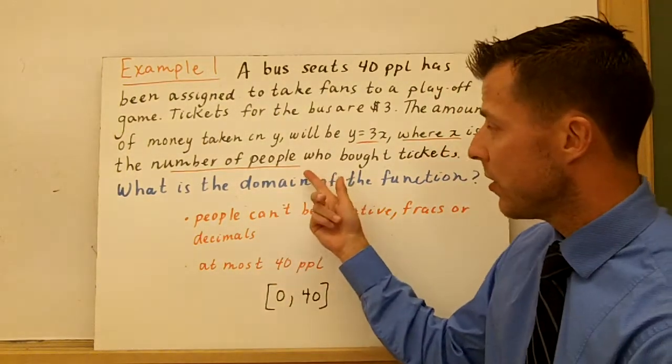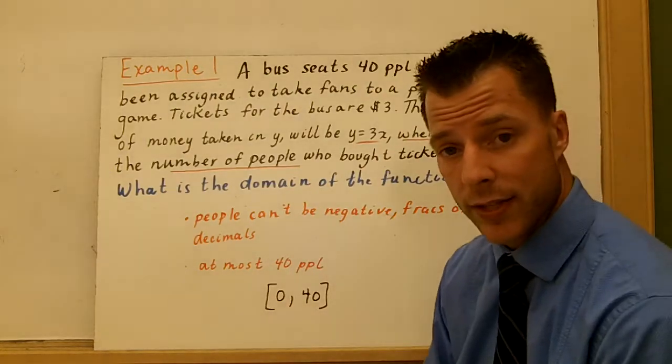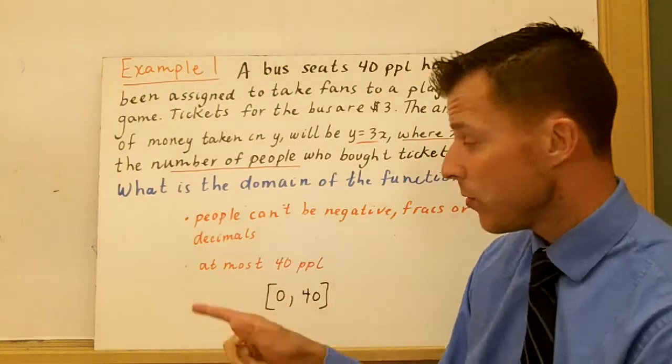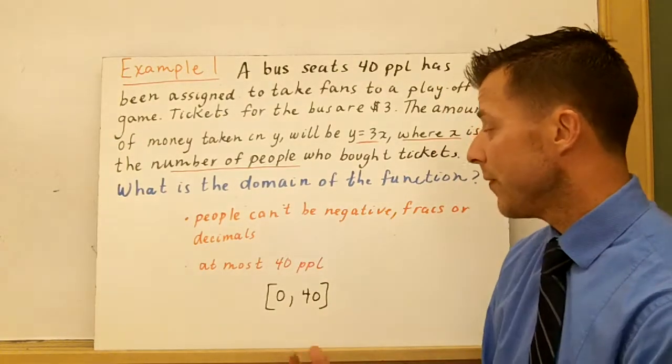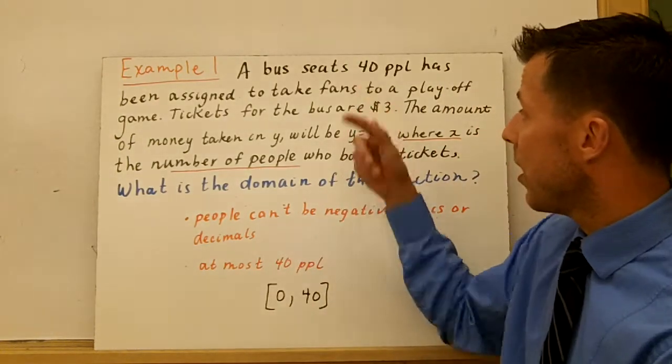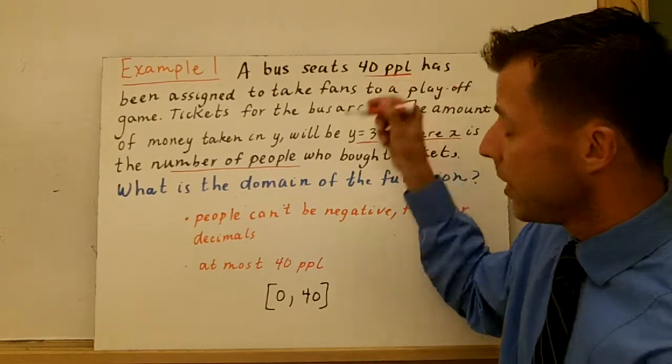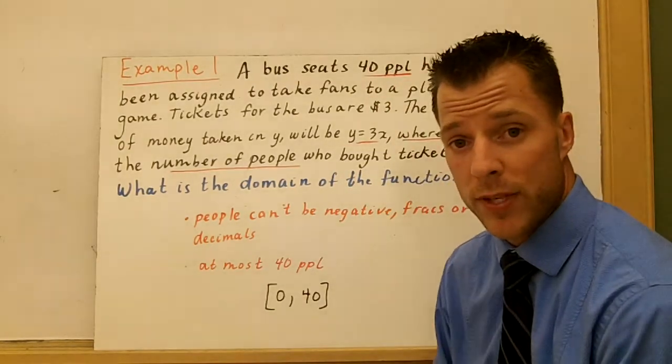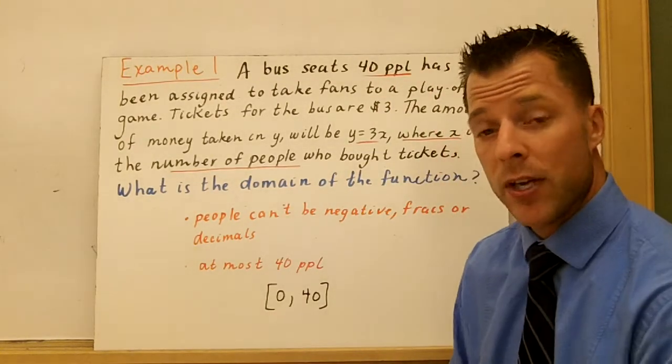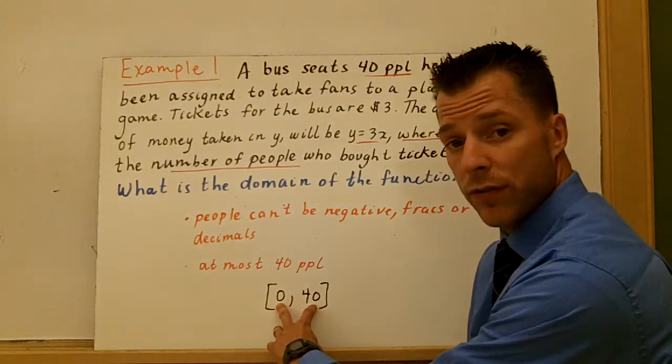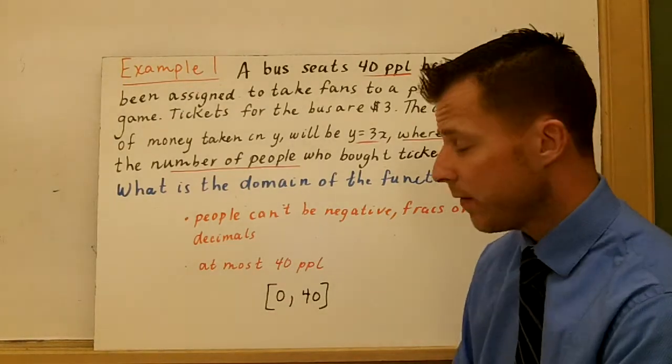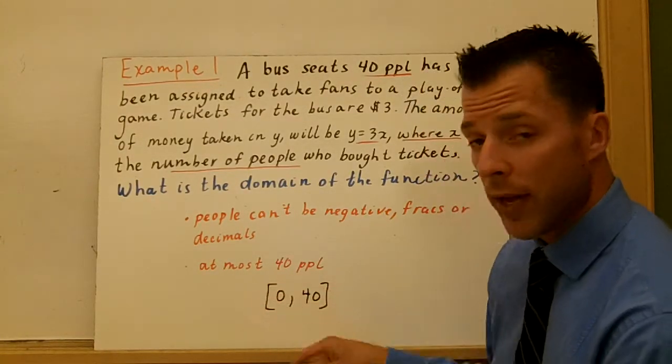But in the context here, the number of people who bought tickets. Well, you can't have negatives, you can't have fractions, you can't have decimals of people. And we have to make sure the most we can have are 40 people. The fewest, unfortunately, would be zero. So nobody went to the game. So our domain are all the integers from zero to 40: 0, 1, 2, 3, 4, 5. So that is our domain.